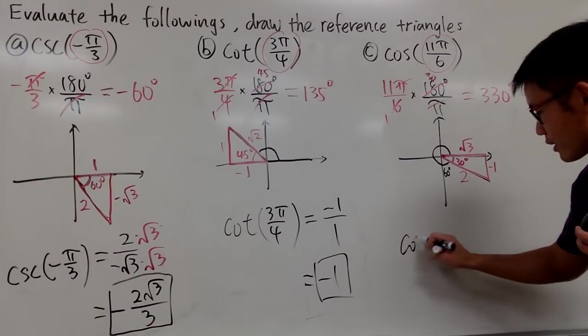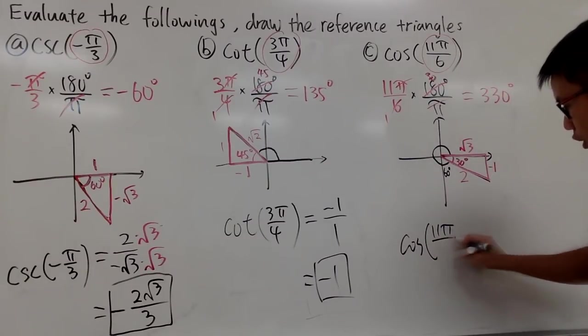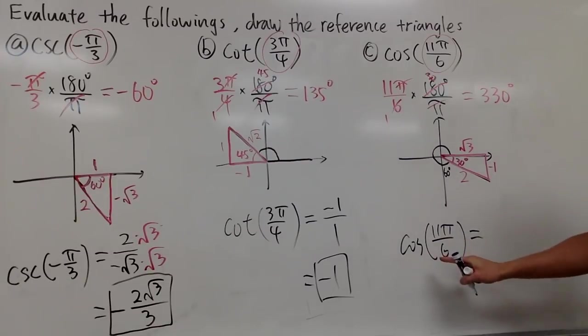Do the cosine. Cosine of 11 pi over 6. Cosine is x over r, so we just have square root of 3 over 2, and then we are done.